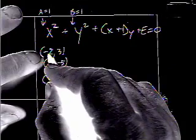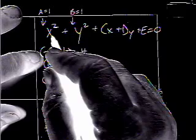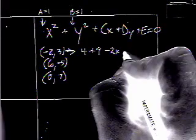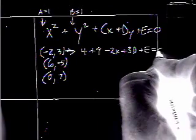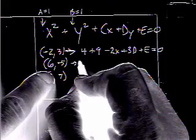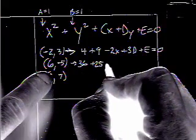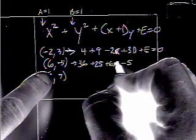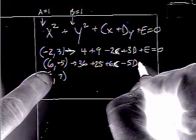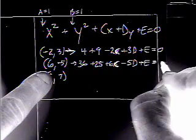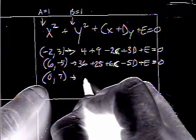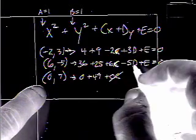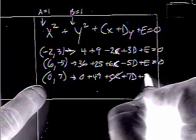So let's see here. Negative 2 is the x value. So, that means we have negative 2 squared is 4, 3 squared is 9, minus 2c, plus 3d, plus e, equals 0. Then, we have 36, plus 25, plus 6c, minus 5d, plus e, equals 0. 0, plus 49, plus 0c, which obviously is going to be eliminated, plus 7d, plus e, equals 0.